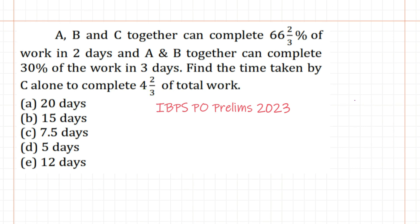From the first sentence, we will find everything for 1 day's work. So A plus B plus C can complete 66 2/3 percentage of work in 2 days. Days, work: 2 days and 66 2/3 percentage of work. Let's convert this into fraction.